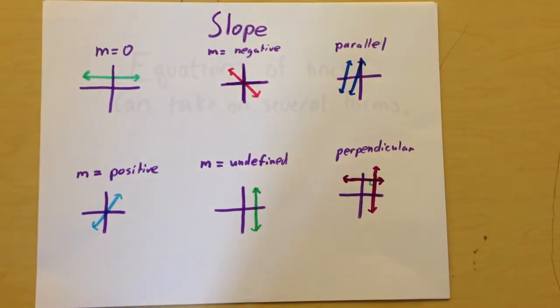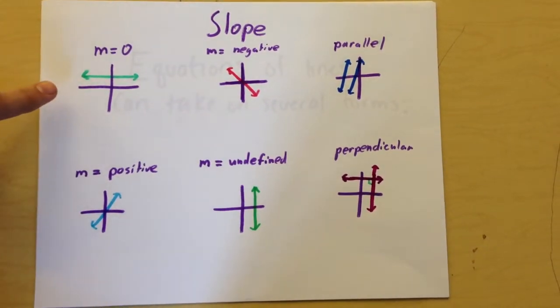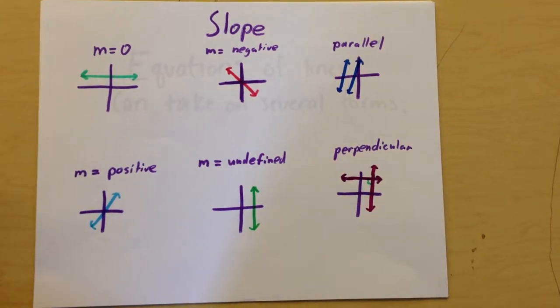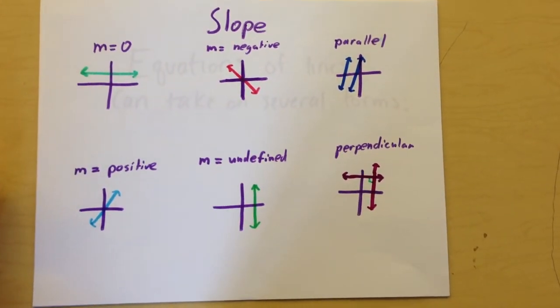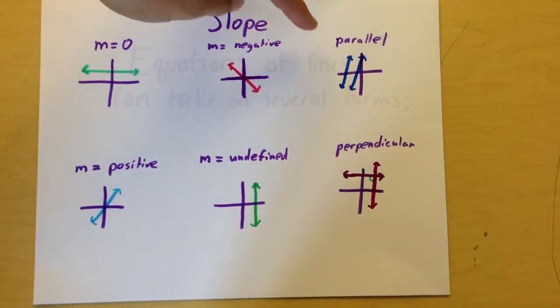Slope. Here are some pictures. Slope is equal to zero on horizontal lines. Slope is negative when the Y increases while the X decreases. Two lines are parallel if their slope is the same.